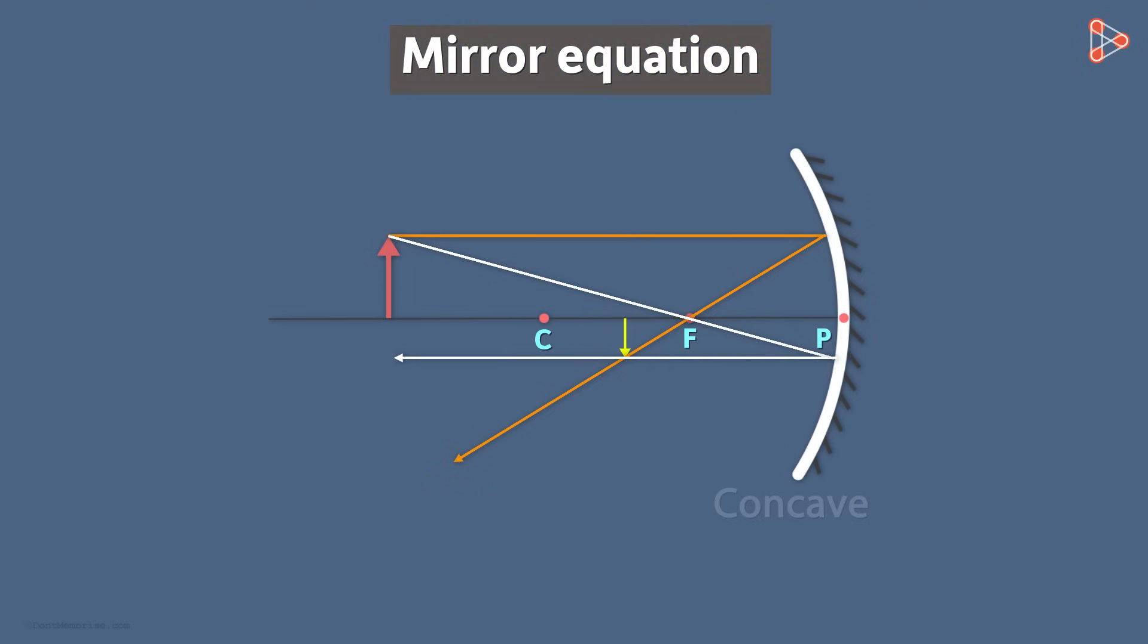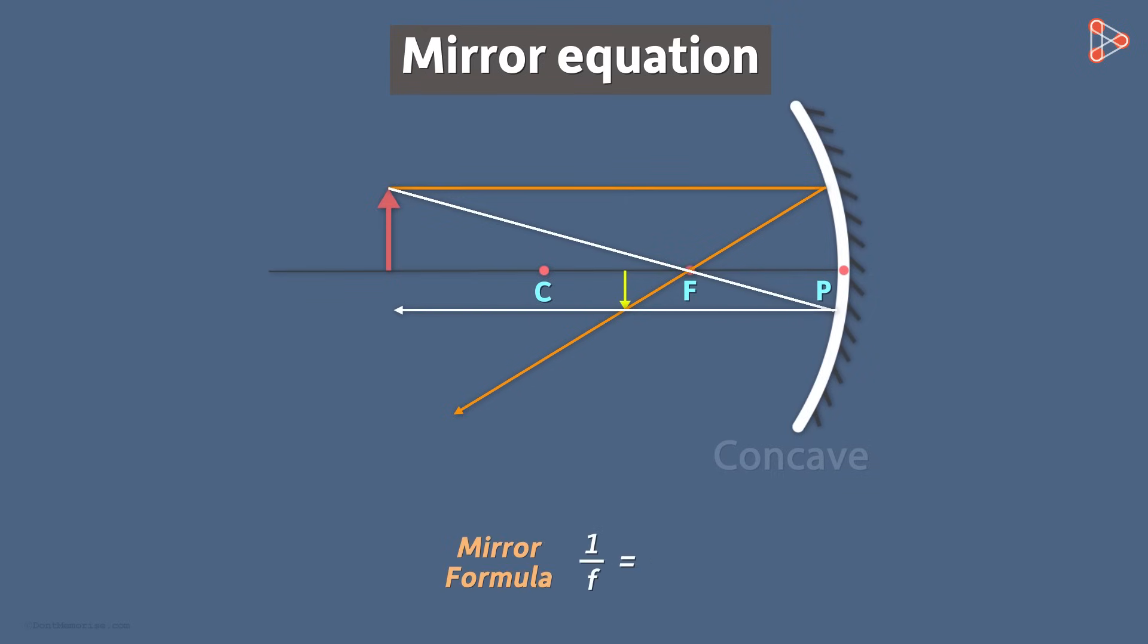So what is a mirror equation? Well let me just write it down first. 1 over f is equal to 1 over u plus 1 over v. What do these three letters symbolize? They are nothing but distances between points. To understand better, let's draw a tangent at point P like this.